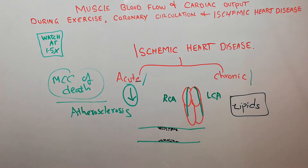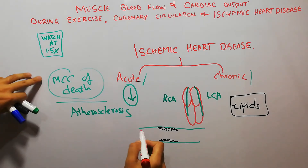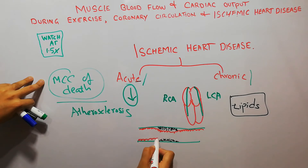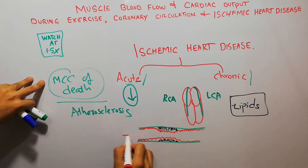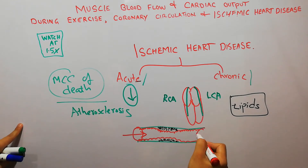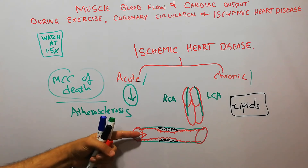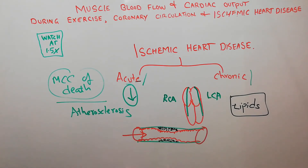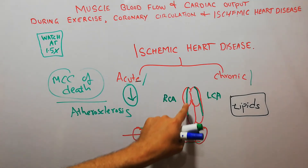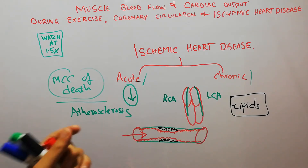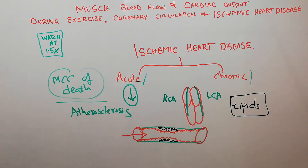This deposition occurs below the endothelium. The endothelium is the lining inside the blood vessel that is in direct contact with the blood. Blood flows through the vessel, and in the atherosclerosis process, lipids get deposited below the endothelium of the coronary blood vessel.